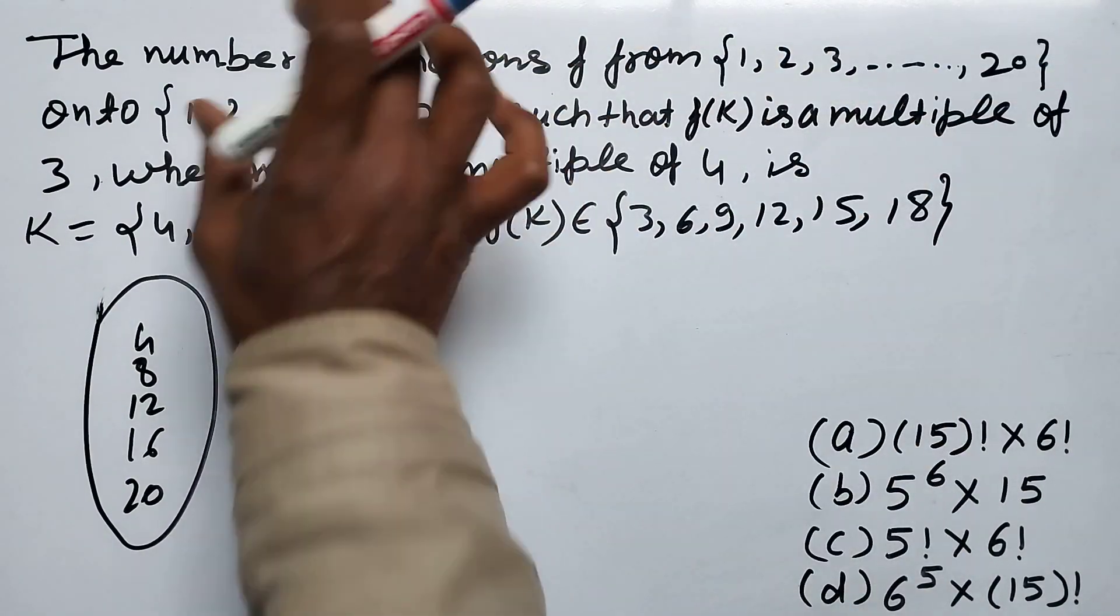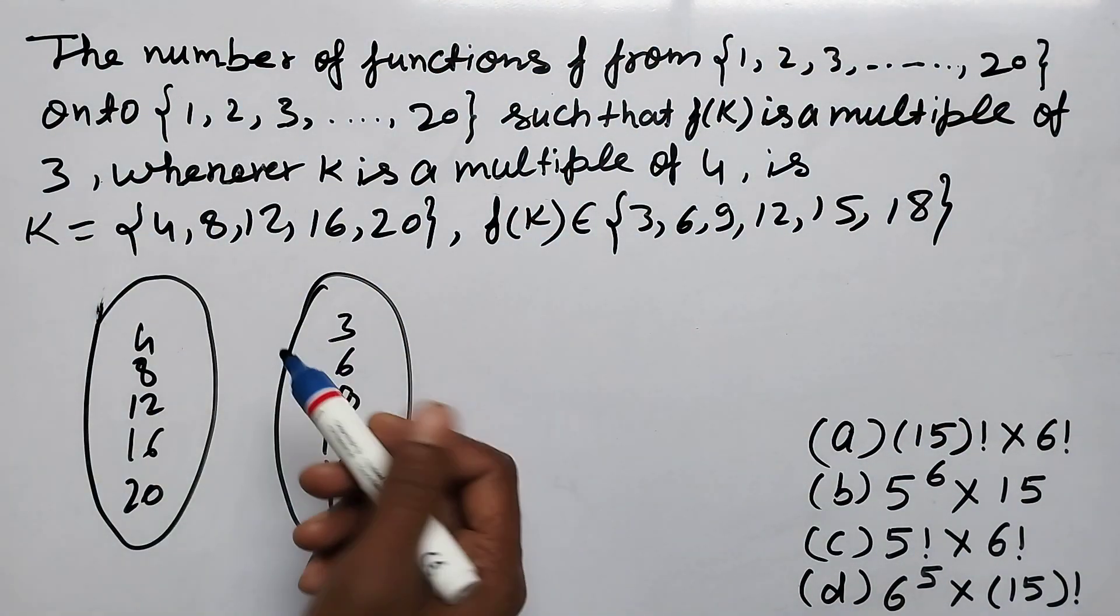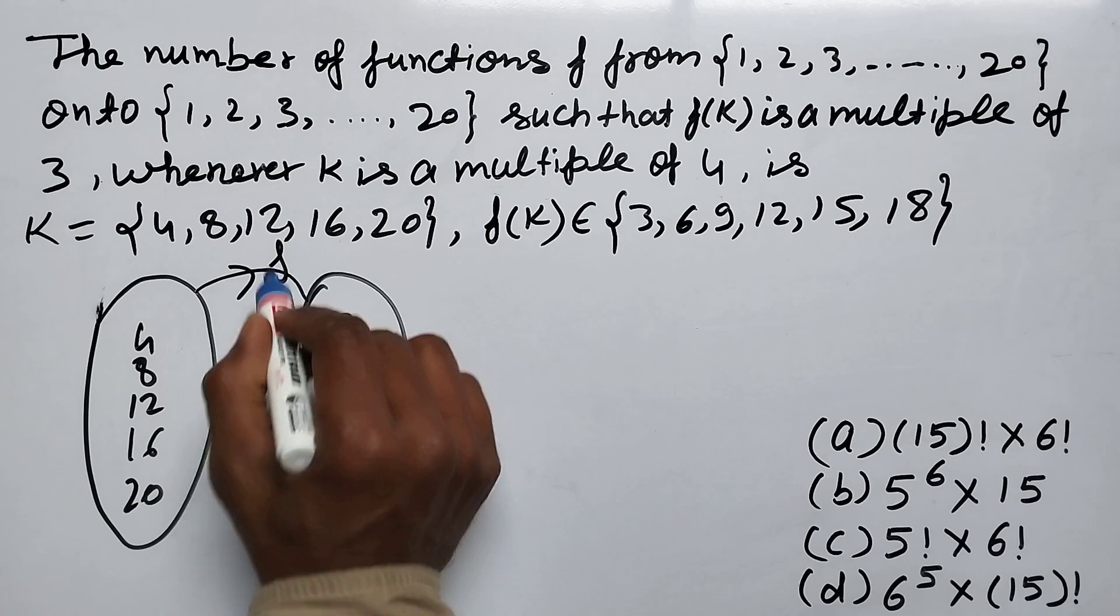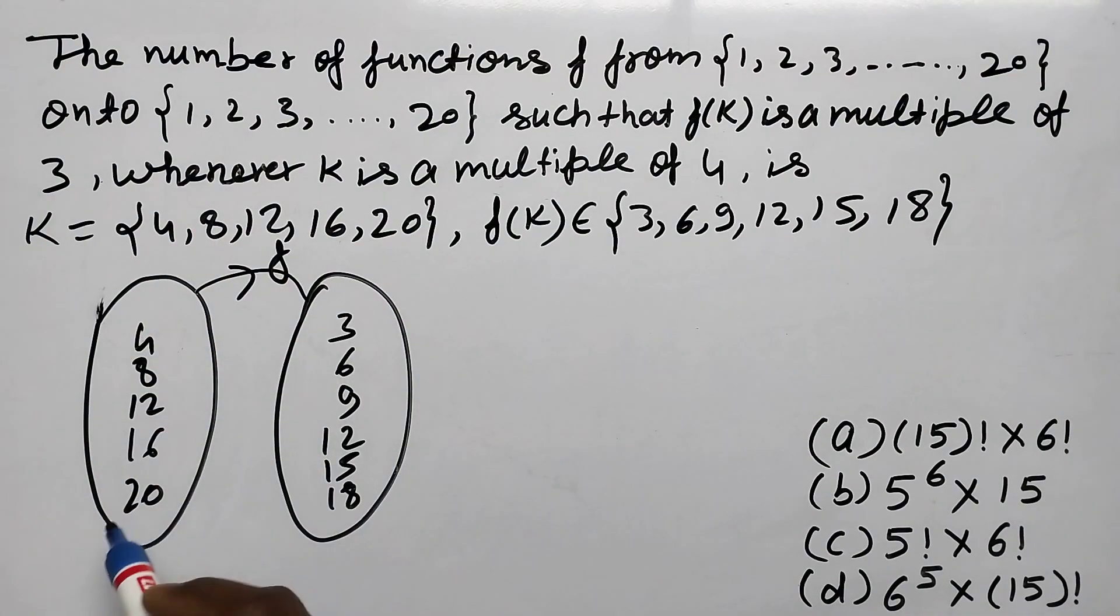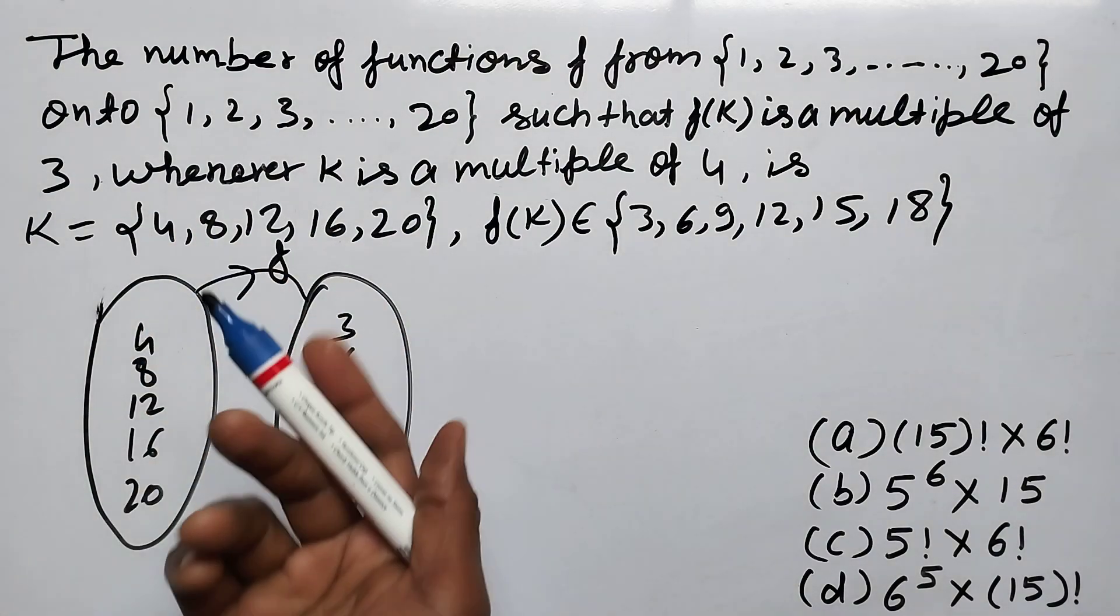This is the domain and this is the codomain. How are these functions being formed? Let's look at this: 5 to 6.